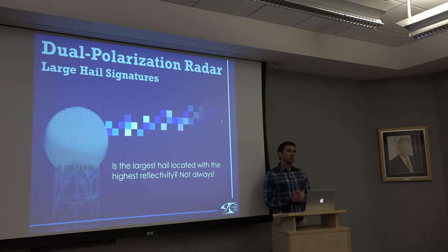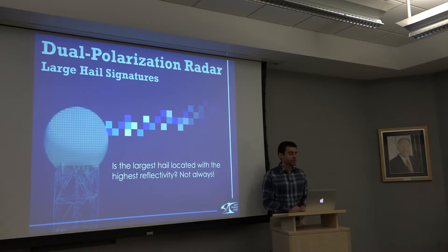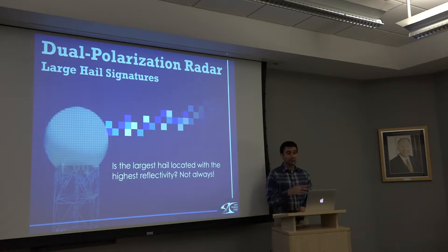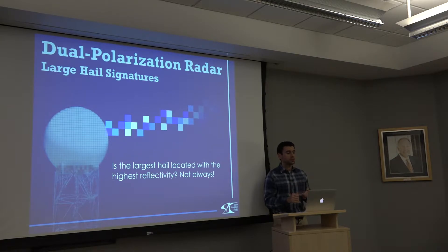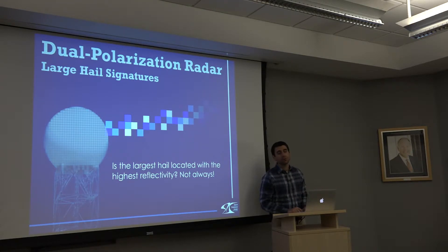We're always used to seeing on TV or looking at a radar image and having our eyes drawn to the reds and pinks — 60, 70 dBZ plus — thinking that's where our monster hailstones are. Is the largest hail always located with the highest reflectivity? The answer is no, and you also need to be looking where dBZ is perhaps only 30 to 40 dBZ.